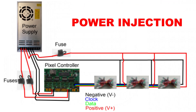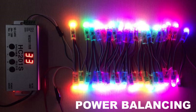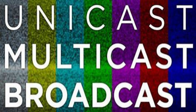Power injection is nothing more than adding additional power to a string of lights from a different power supply at a point at which the voltage drops start to affect the lights. Power balancing is nothing more than adding additional power to a string of lights from the same power supply at the point at which the voltage drops start to affect the lights.